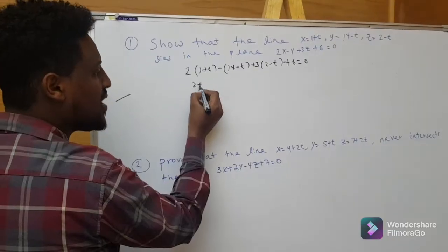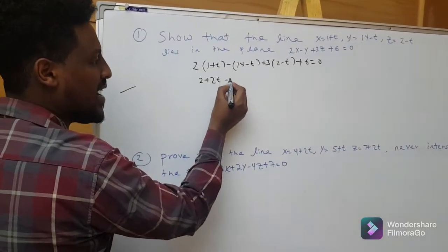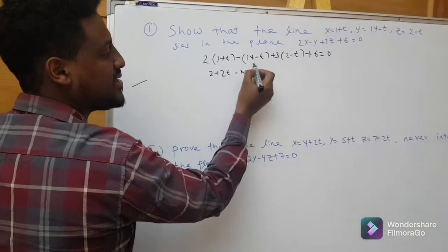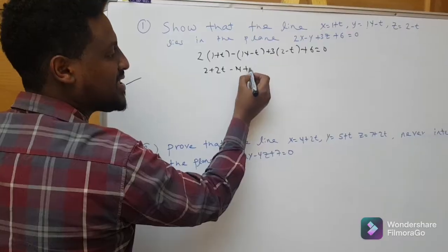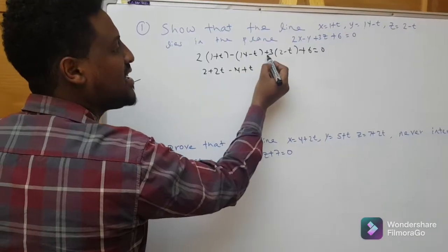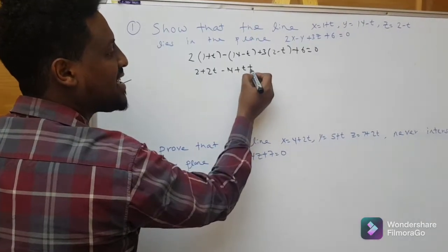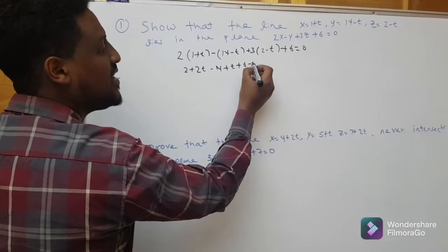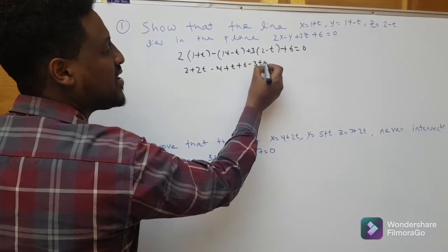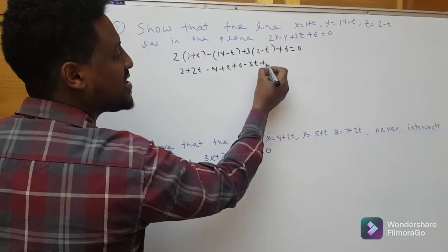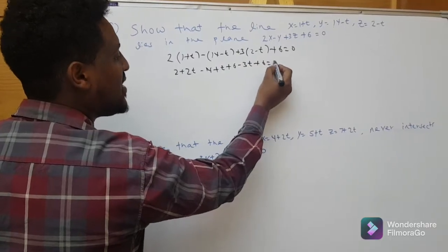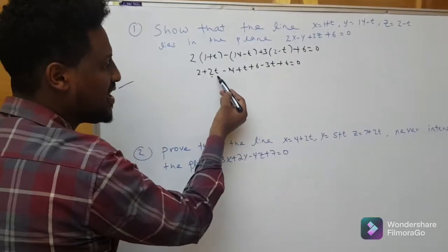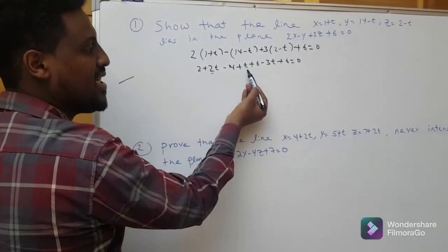2 minus t plus 6 is equal to 0. Minus of minus, plus t; 3 times 2 plus 6; 3 times negative t is minus 3t; then plus 6 is equal to 0. We get 2t plus t.